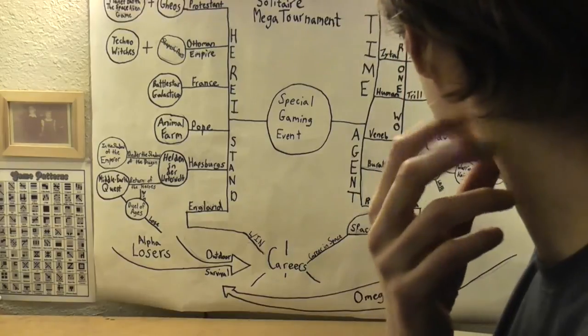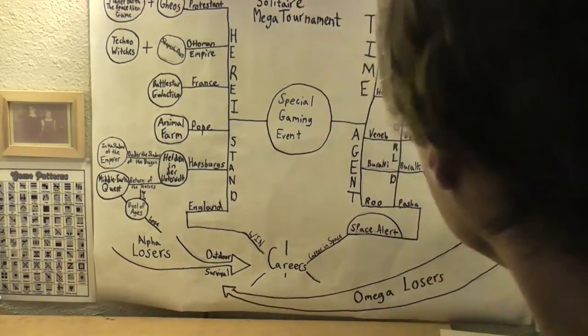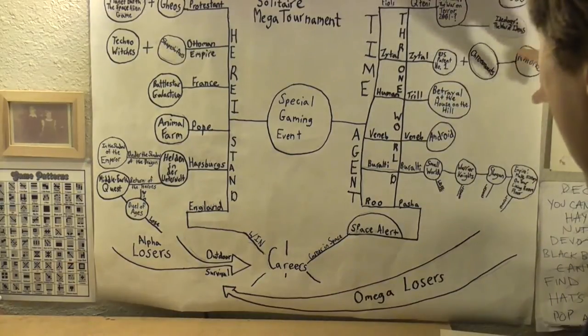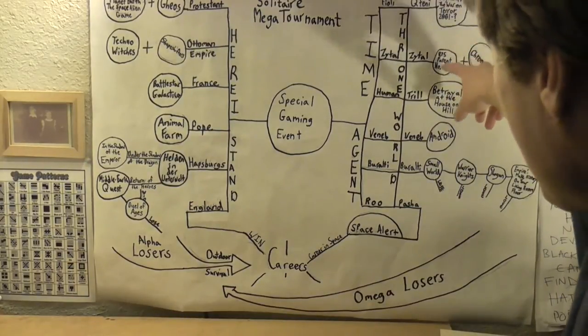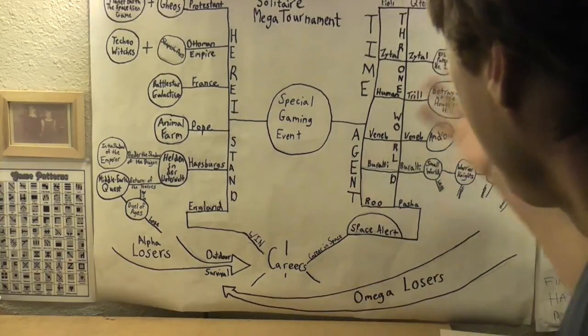And then games feed into other games differently. So Chronos, for example, just decides the starting cash in the combination game of US Patent Number One and Chrononauts. And so there's that.